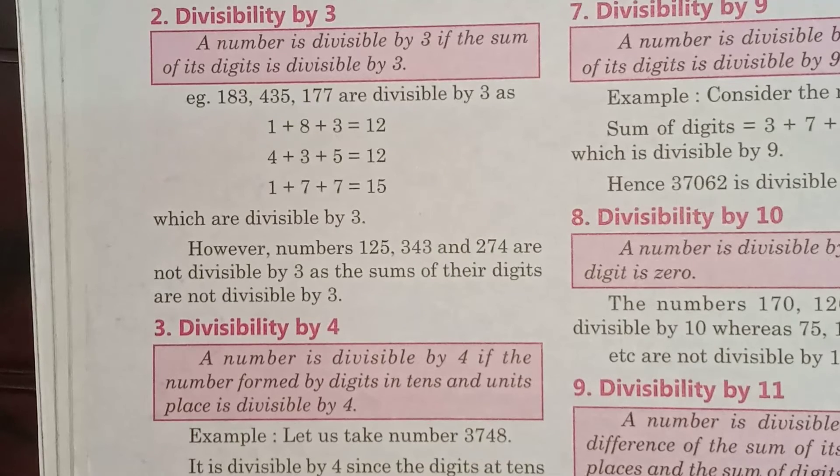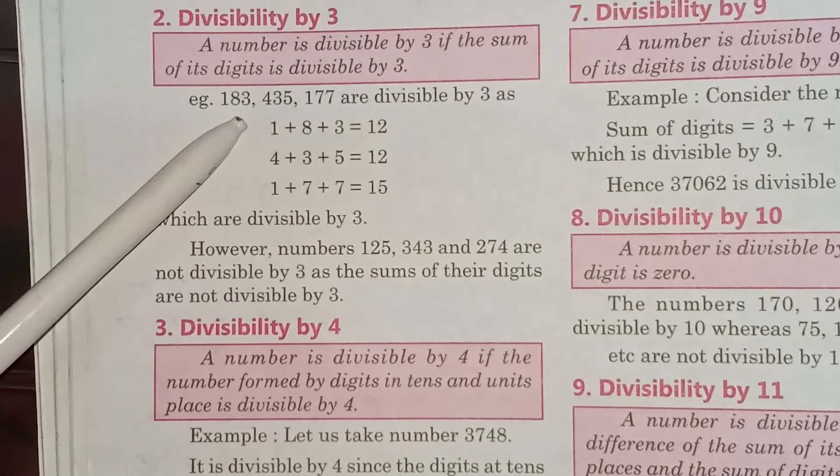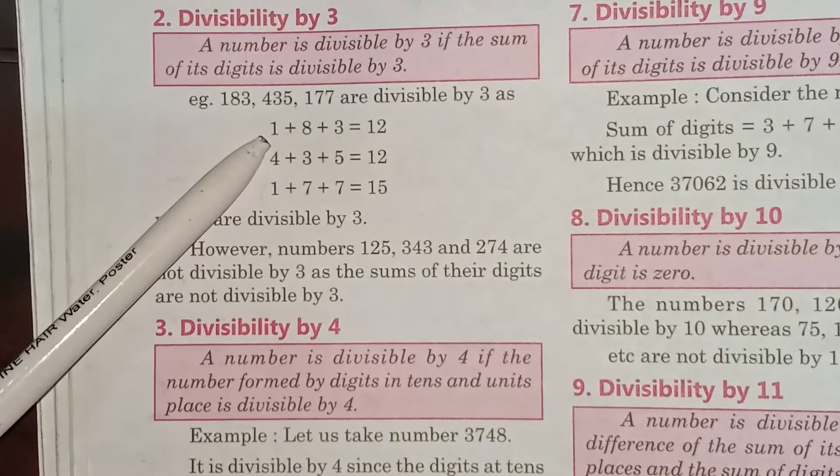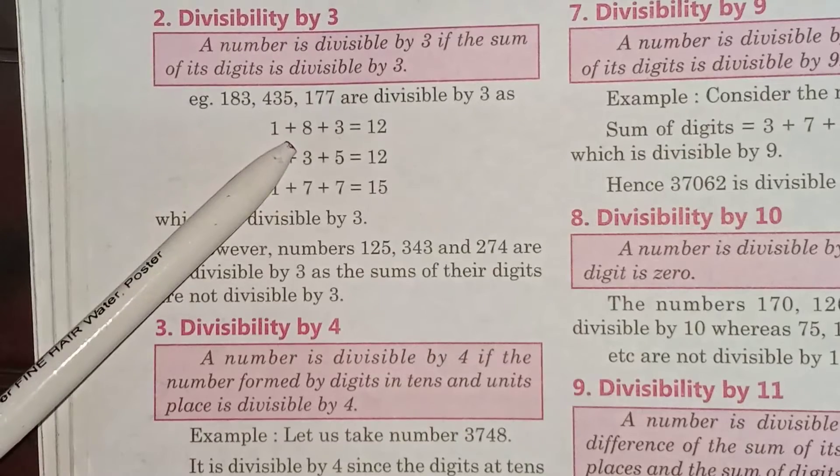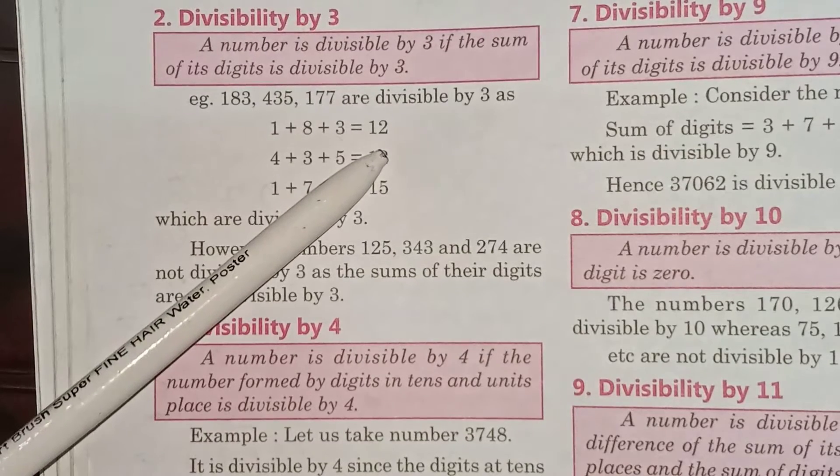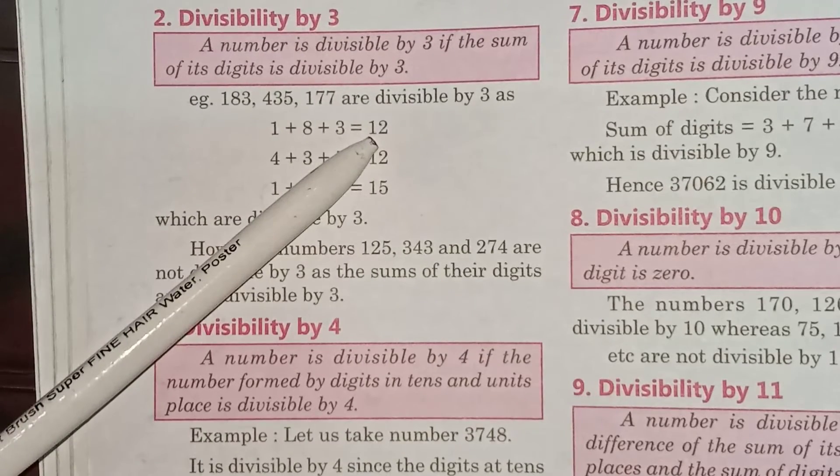Next, divisibility by 3. A number is divisible by 3 if the sum of its digits is divisible by 3. For example, if 183 is given, the sum of its digits 1 + 8 + 3 = 12, and 12 is divisible by 3.